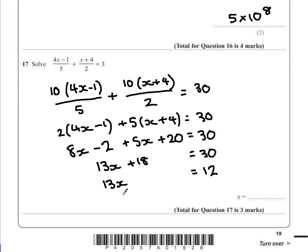Now to find out what x is equal to we have to divide by 13 which means you have 12 over 13 as your final answer.